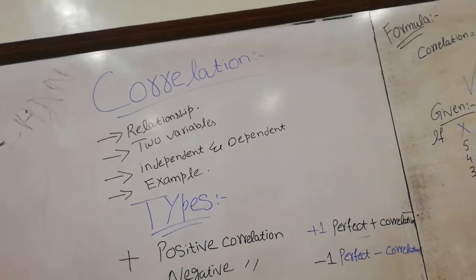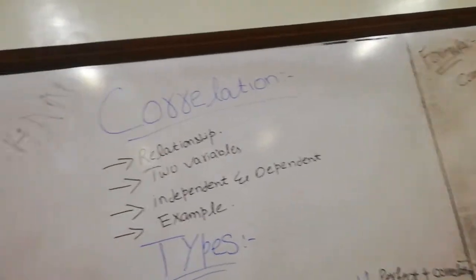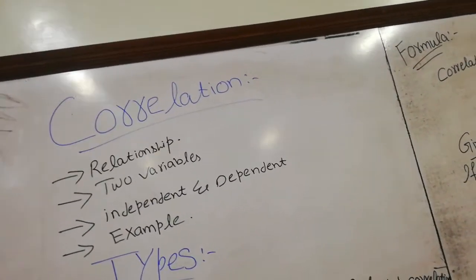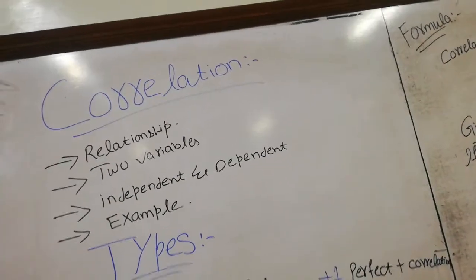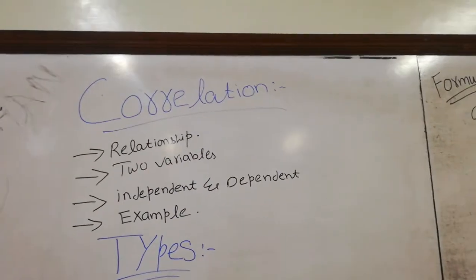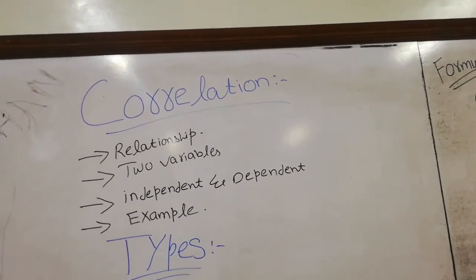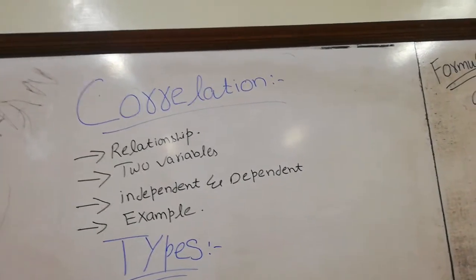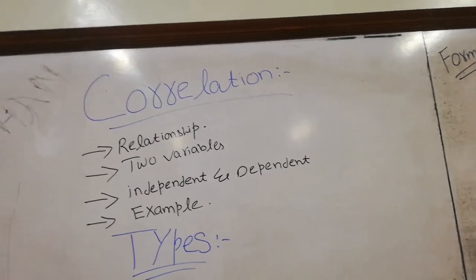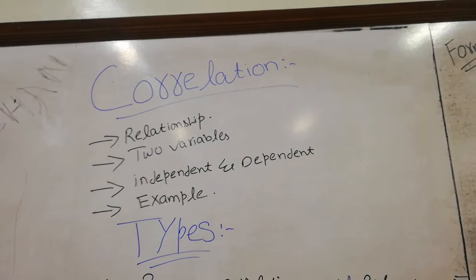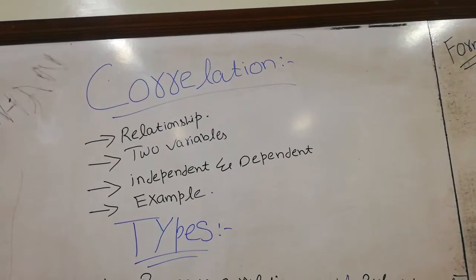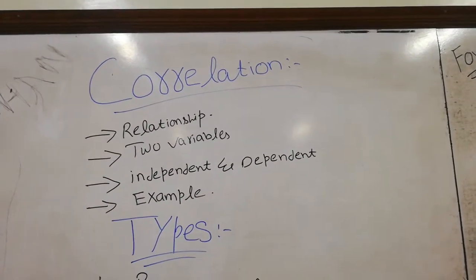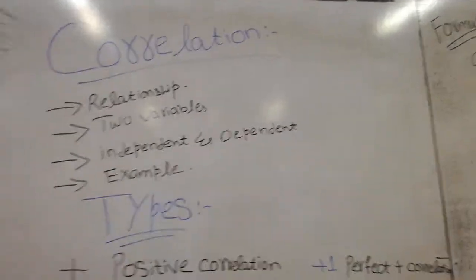Today the topic of our lecture is related to correlation. Correlation is the relationship between two variables. We call the two-variable relationship a correlation — one variable is independent and the other variable is dependent.